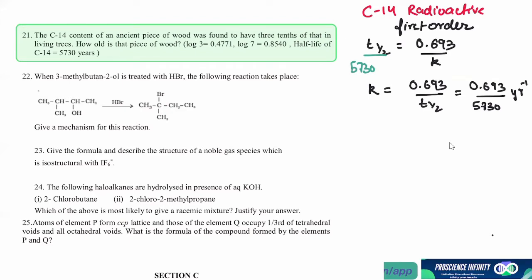When we have K, we can find the time. We need to consider 3/10th of the carbon-14 in the living tree. Let the carbon-14 in the living tree be the current value — that is the maximum, because over time it decays. So that is R₀.